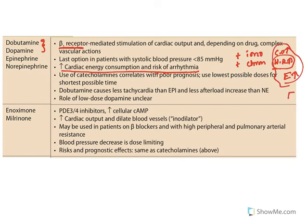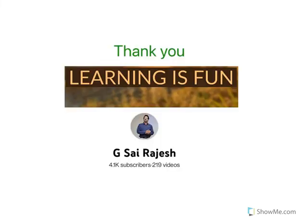Inamrinone and milrinone, as PDE-3 inhibitors, increase cellular cyclic AMP. Importantly, they increase cardiac output and dilate blood vessels, which is why they are known as inodilators. These agents are primarily used to treat pulmonary arterial resistance. That concludes the overview of inodilators and the remaining inotropic agents. Thank you for watching — if you liked the video, please subscribe and share.